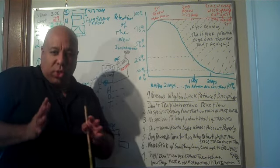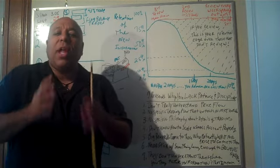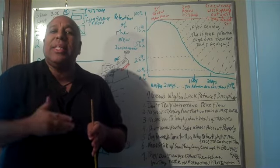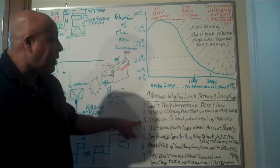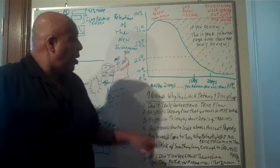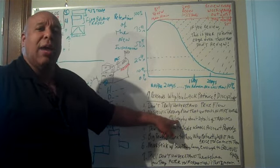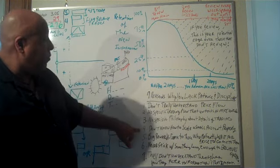The next reason that people don't have patience or discipline is because they don't have a specific philosophy about the details of trading. So you need to get a specific philosophy about the details of trading. And then if you take any new information in, filter it from the philosophy that you have on trading. Make sure you get the correct philosophy.